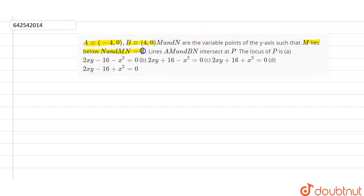MN equals 4. So the distance between M and N is 4. And M lies below N. So lines AM and BN intersect at point P. We have to find the locus of P. The given points are A(-4,0) and B(4,0).